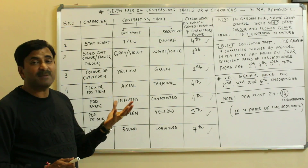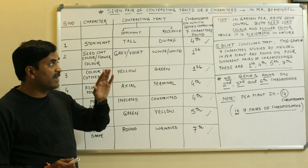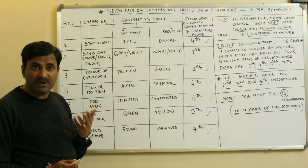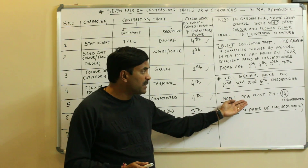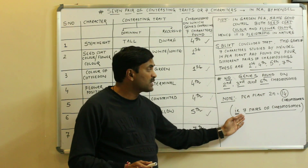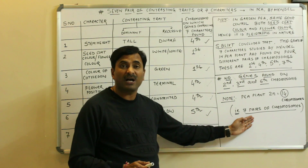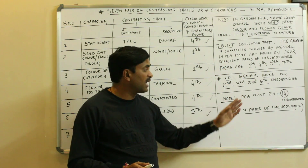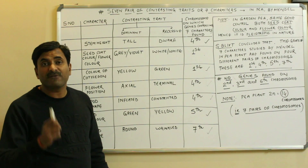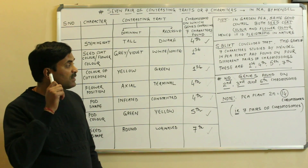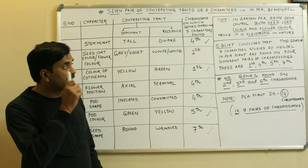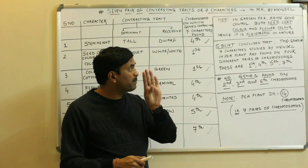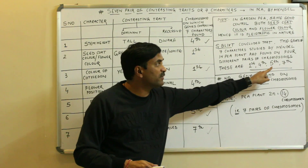A question often asked in examinations is whether the seven contrasting traits are found on seven pairs of chromosomes. We know that the pea plant has 2n = 14 chromosomes, or seven pairs. Students often answer that seven characters are found on seven pairs of chromosomes — this is wrong. Always remember that the seven characters are found on only four pairs of chromosomes: chromosome numbers 1, 4, 5, and 7.